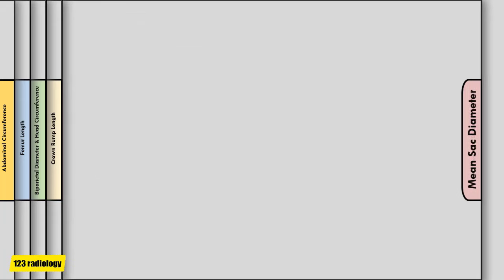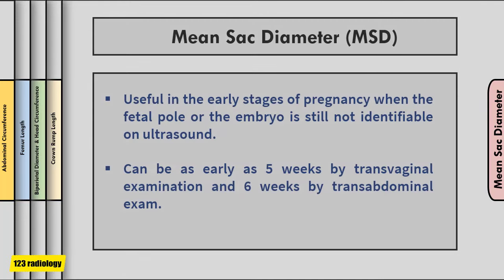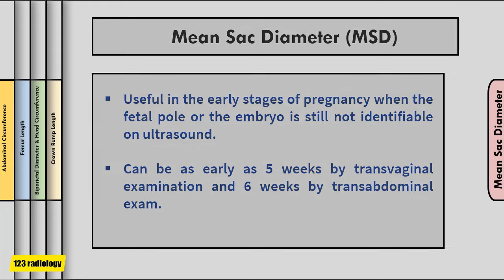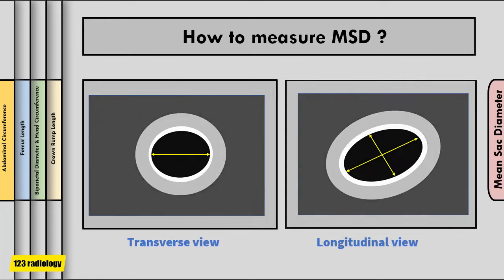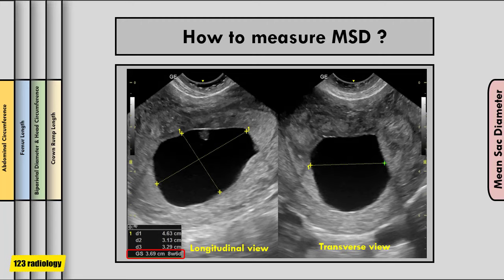Let's start with the mean sac diameter. This parameter is useful in the early stages of pregnancy when the fetal pole or embryo is still not identifiable on ultrasound — this can be as early as five weeks by transvaginal examination and six weeks by transabdominal exam. To measure mean sac diameter, obtain longitudinal and transverse views of the gestational sac. On the longitudinal image, measure the length and height, and on the transverse image measure the width, only measuring the anechoic area and excluding the echogenic rim.